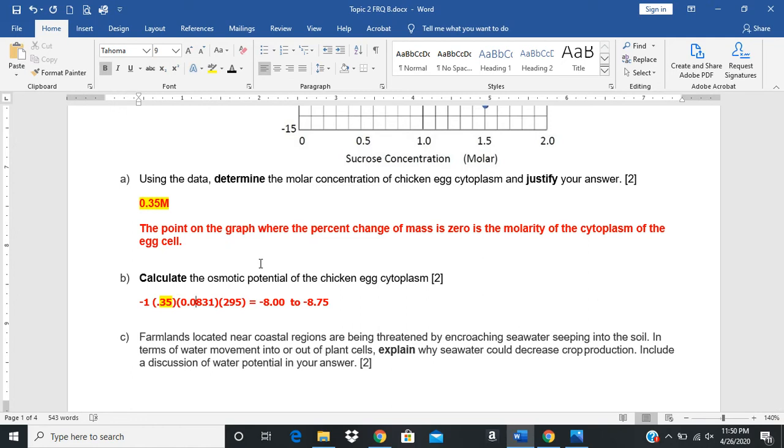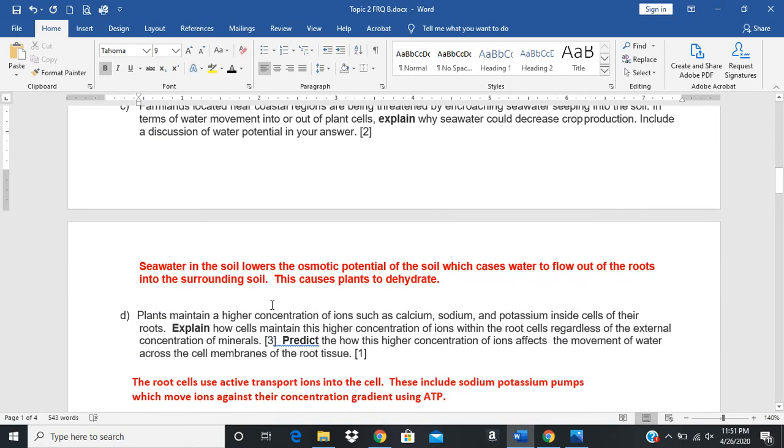In farmlands near coastal regions, seawater is creeping in and seeps into the soil. In terms of water movement in or out of the cell, explain why seawater could decrease crop production. They want you to mention water potential. We know that with seawater we're going to get an increase in salt in the soil. That lowers the osmotic potential of the soil and that's going to cause water to flow out of the roots. The plants are going to dehydrate. Plants dehydrate, they die or they don't do well. That's going to lower crop production.